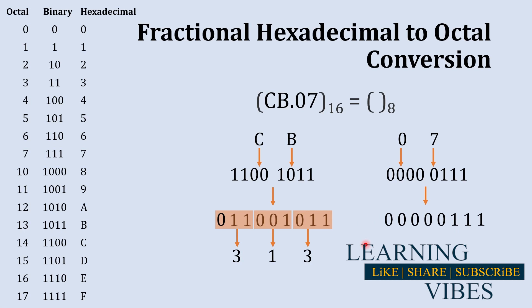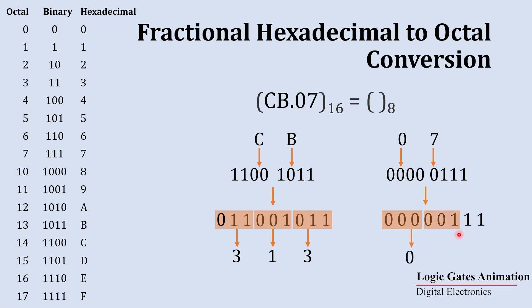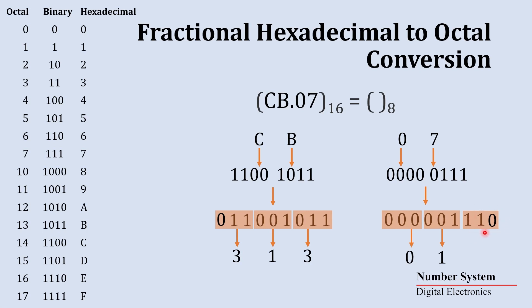To convert this binary fractional part into octal, we create sets of three digits starting from the left. The first set, 000, is 0 in octal. The next set, 001, is 1 in octal. The remaining two digits get a zero added on the right — the set 110 is 6 in octal. So the fractional part in octal is .016.